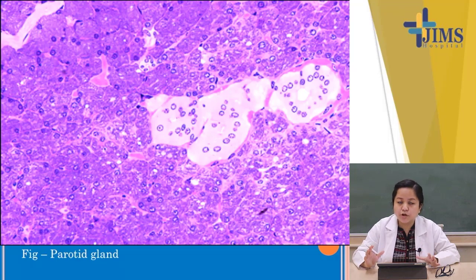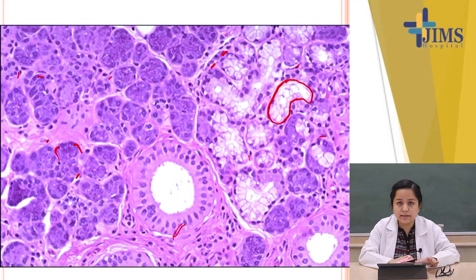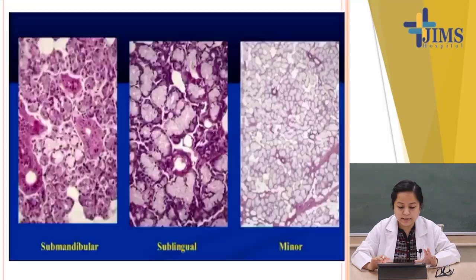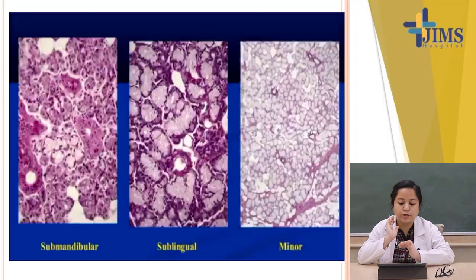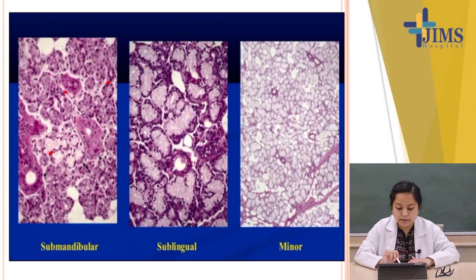The parotid is predominantly composed of serous acini, as seen in the slide with all serous acini and the duct visible. In the submandibular gland, both serous and mucous cells are present — serous cells with granular cytoplasm and mucous cells appearing more vacant.